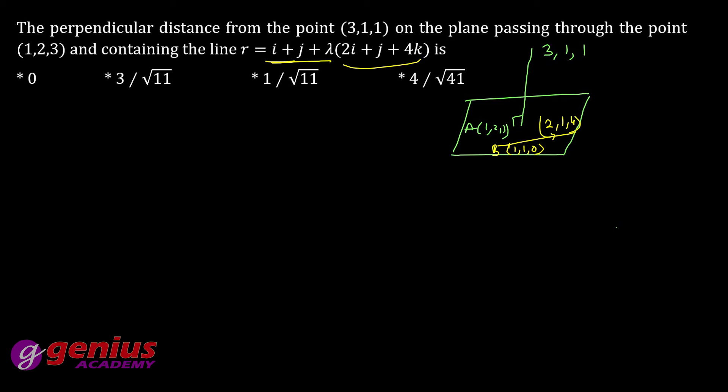Ab dekhiye direction ratio nikalte hai pehle ab ki. Direction ratio of ab to kaisa karte hai minus kar lete hai. One minus one zero, one minus one zero, two minus one one, three minus zero three. Direction ratio aagayi. We know that equation of line passing through, equation of line passing through...